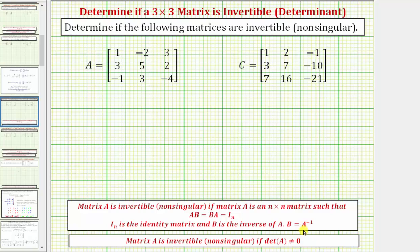The easiest way to determine if a square matrix is invertible is by using the determinant. If matrix A is invertible or non-singular, then the determinant of matrix A does not equal zero. So we'll find the determinant of matrix A and matrix C to determine if each is invertible or non-singular.